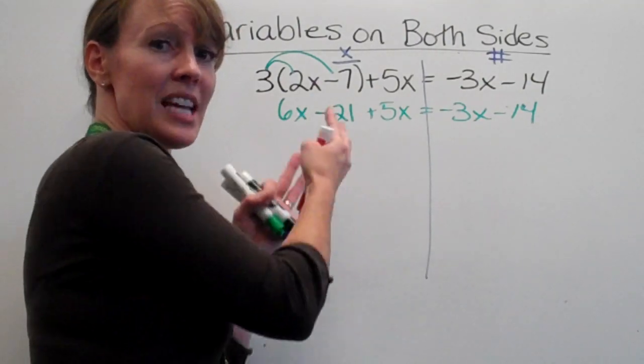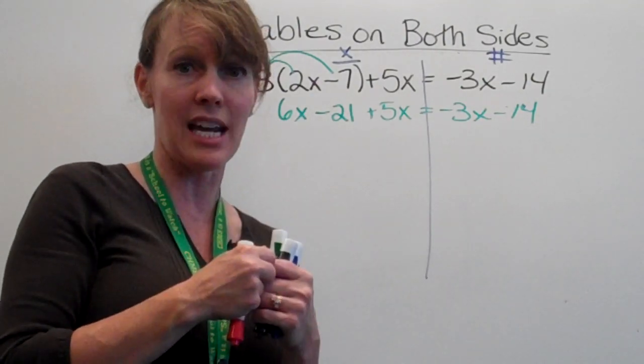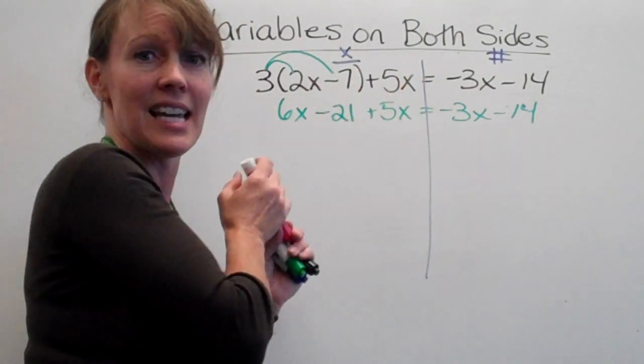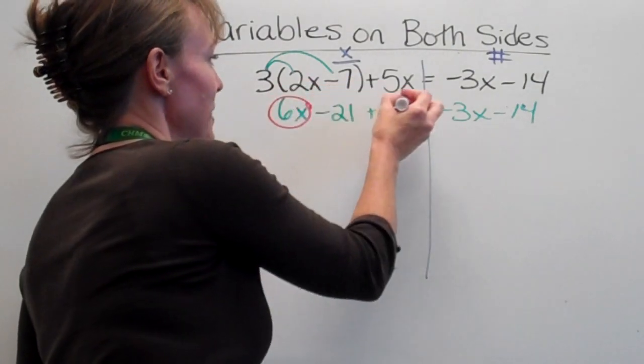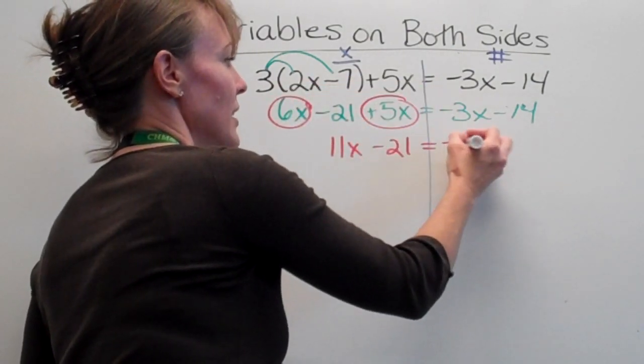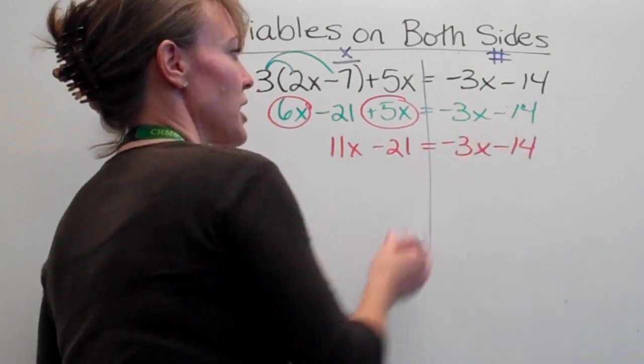All right, now I'm going to look on the same side to see if there's anybody we can put together and sort our laundry. And we look and we say, oh yes, 6x and 5x are like terms. So I'm going to add them together to get 11x minus 21 equals negative 3x plus 14.